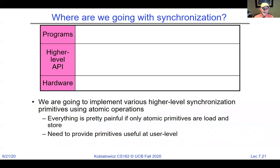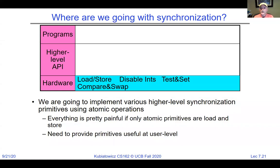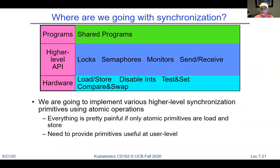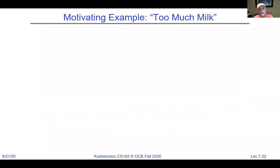Where are we going with synchronization? We're going to implement various higher-level synchronization primitives using atomic operations to write correct code. We'll start with hardware — what can hardware do to help us build locks? We'll start with loads and stores and then move forward, figure out how to get synchronization out of hardware, then build locks, semaphores, and monitors. Our motivating example is the 'too much milk' problem.